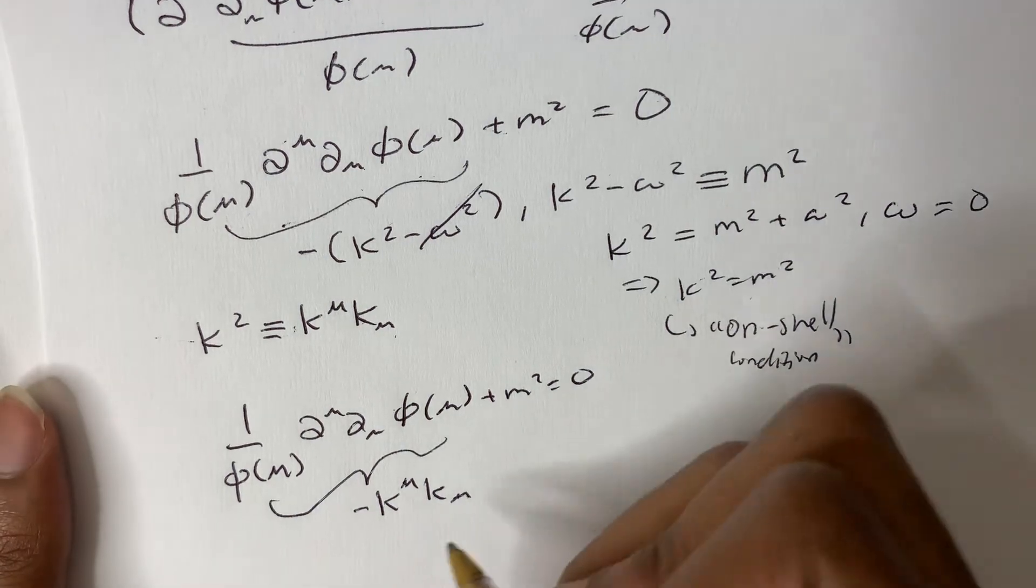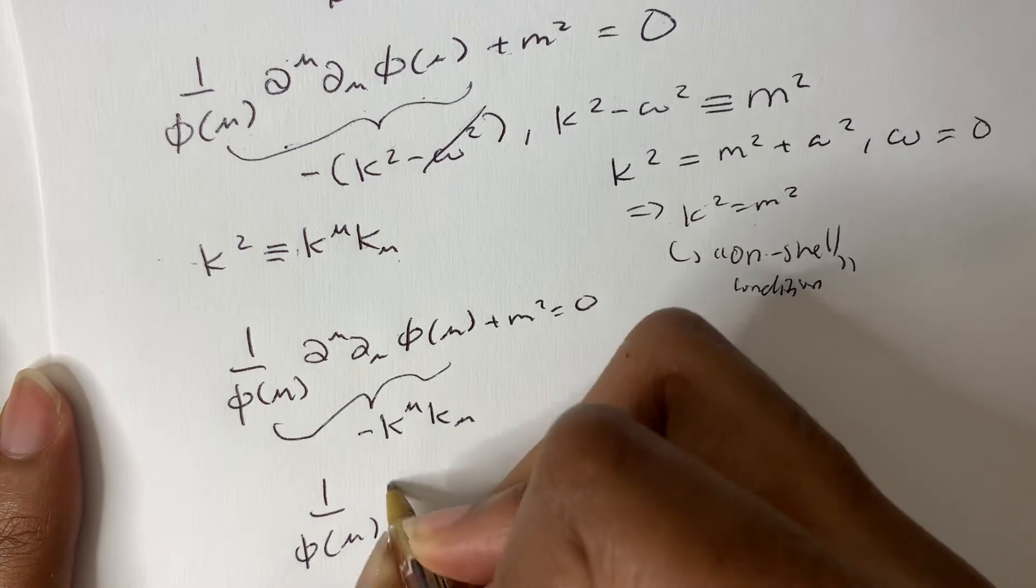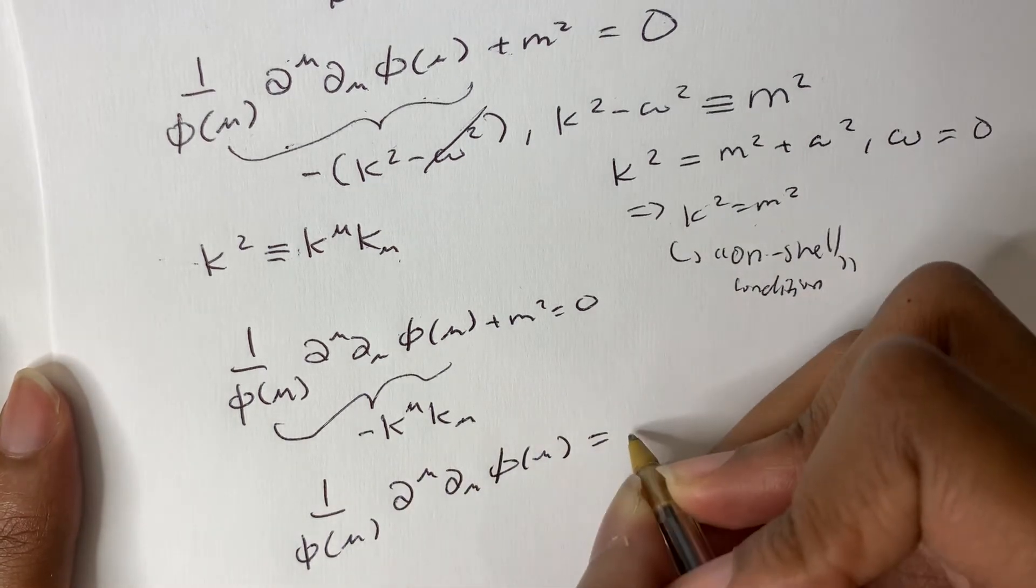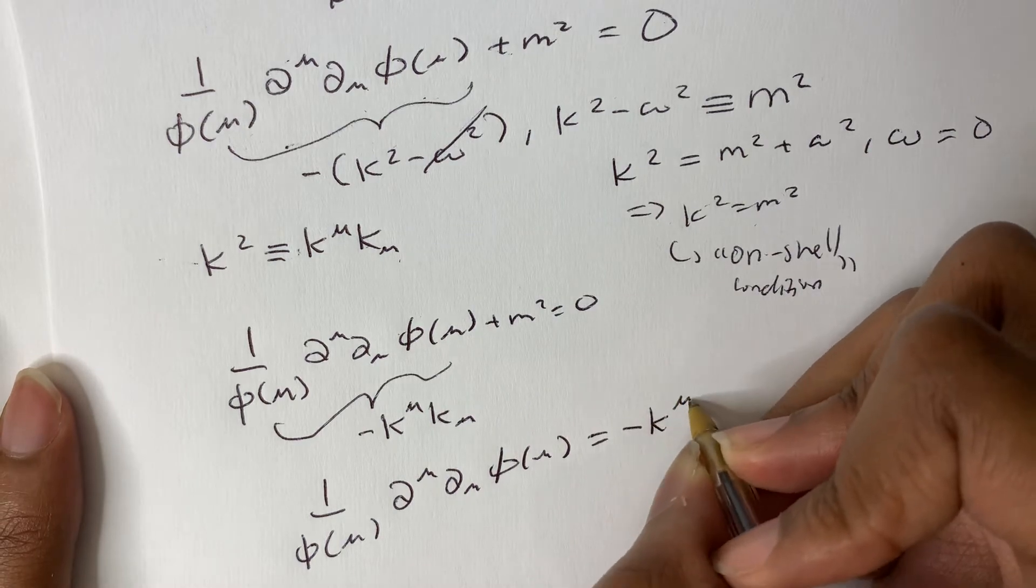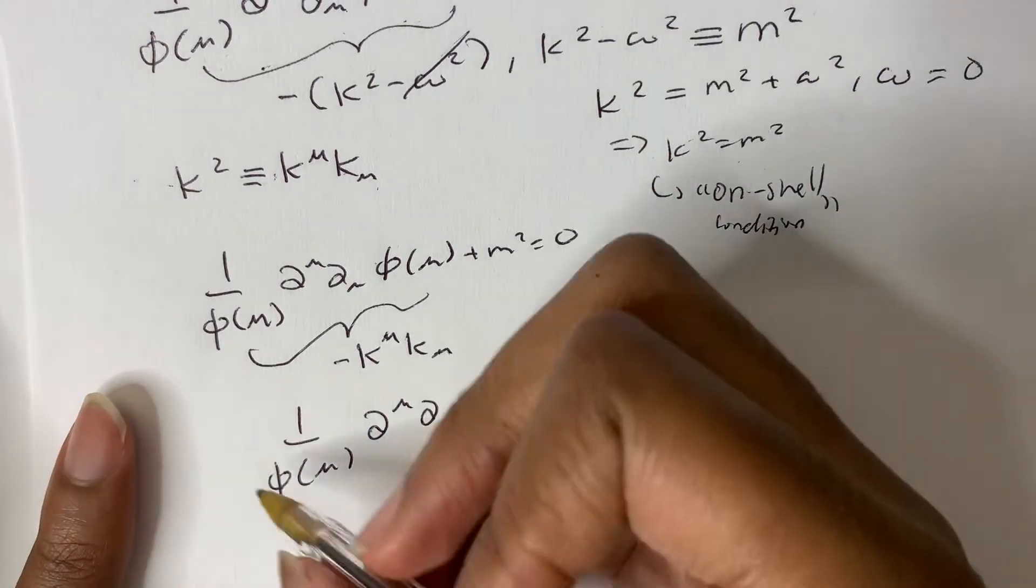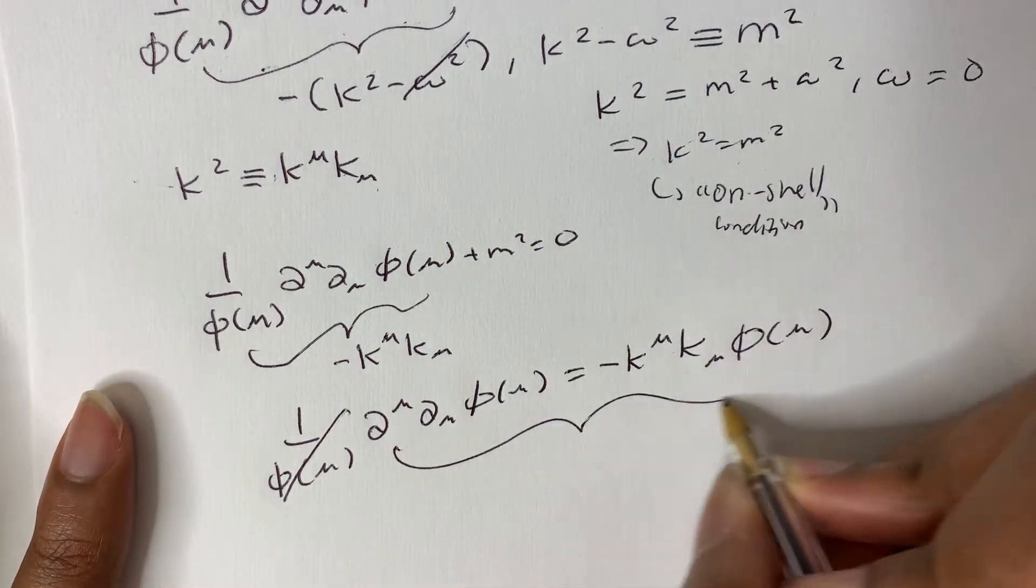So now what do we do? Well, now, we have that 1 over phi of x mu, partial mu, partial mu, of phi of x mu. This equals minus k_mu k^mu. So we can multiply both sides by phi of x mu. And this is the differential equation that we have to solve.